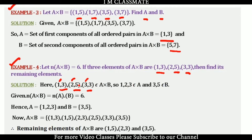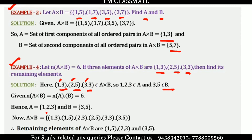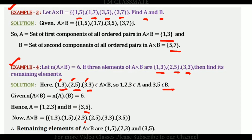We see the given pairs are (1, 3), (2, 3), (2, 5), (3, 3), and (3, 5). Cardinality of A cross B equals cardinality of A times cardinality of B, which is 6. So cardinality of A = 3, meaning A = {1, 2, 3}, and B = {3, 5}. The full A cross B is (1,3), (1,5), (2,3), (2,5), (3,3), (3,5).